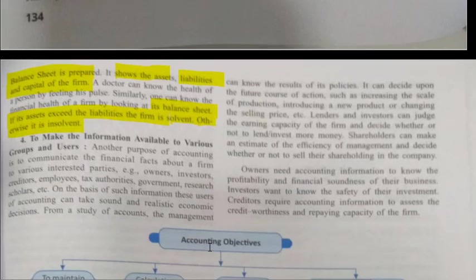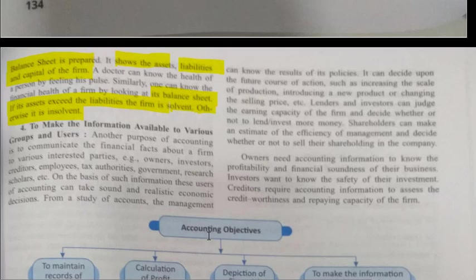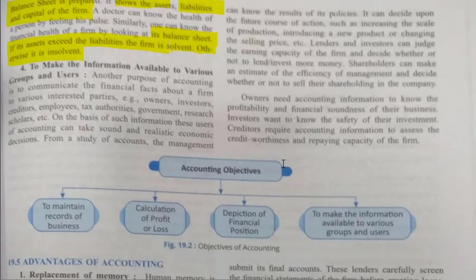The fourth objective is to make information available to various groups and users. Another purpose of accounting is to communicate financial facts about a firm to various interested parties — for example, owners, investors, creditors, employees, tax authorities, government, research scholars, etc.